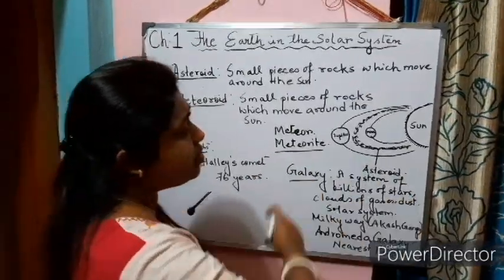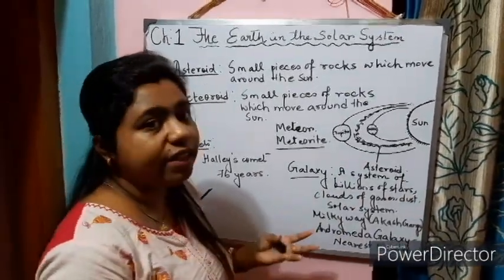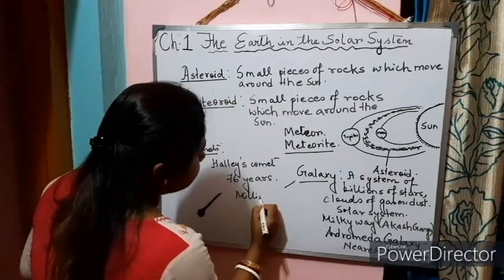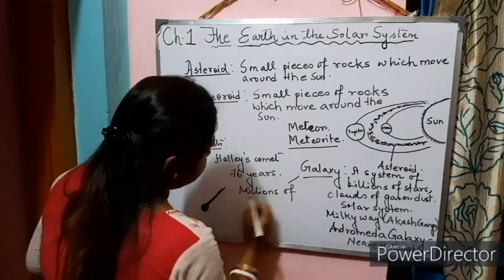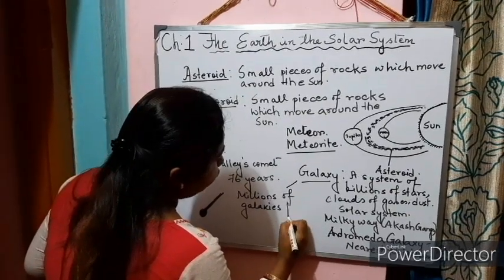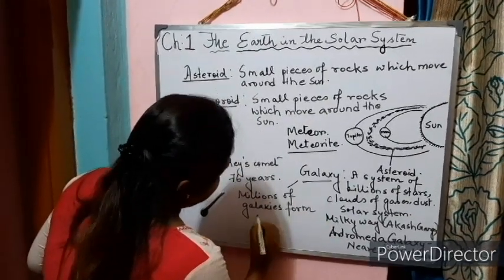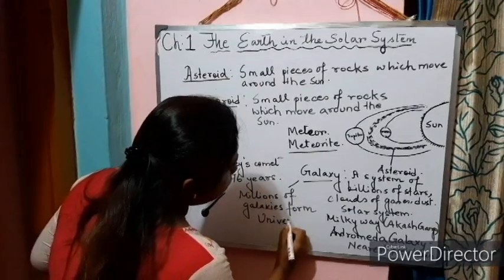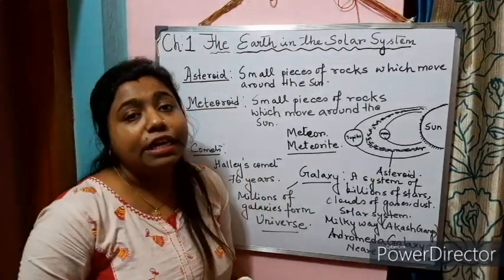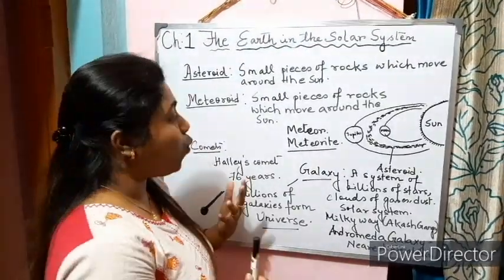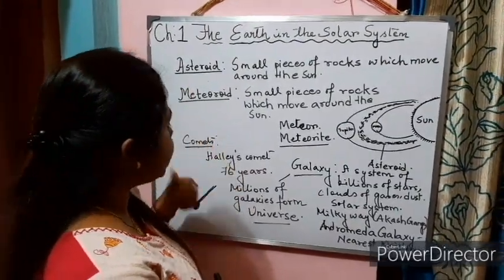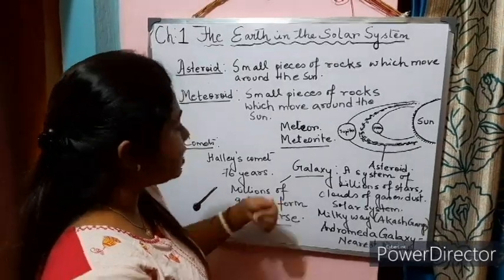Millions of galaxies form our universe. So what we learned: asteroids, meteoroids, comets, galaxy, and universe.